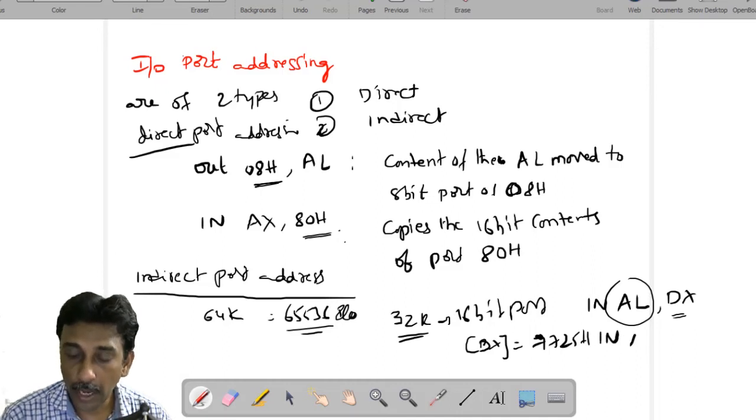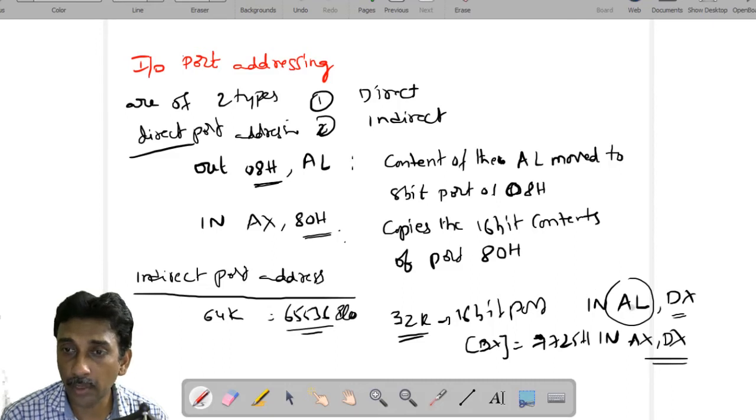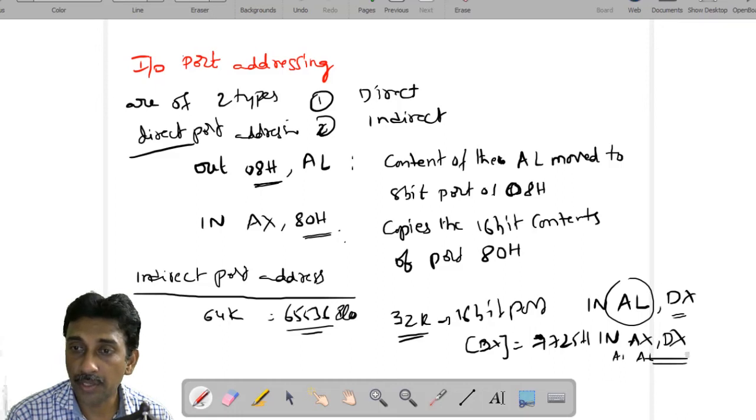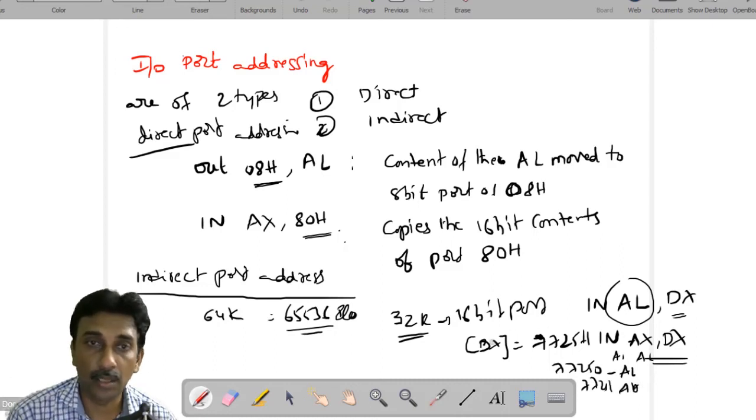So next one, MOVE IN AX, DX. In memory location, each memory location contains only 8-bit, so that the lower byte will be loaded into the AL and higher byte will be loaded into the AH register. The same thing will be followed. Successive memory locations will be utilized, like 7725 zero in AL data and 7725 one in AH data. Successively it can store via the DX register.